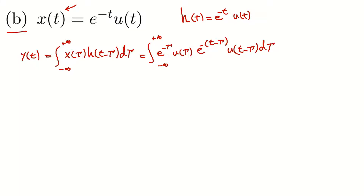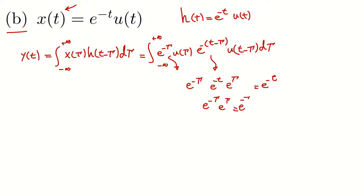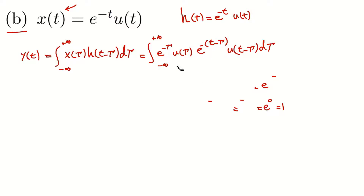Let's simplify: e^(-(t-τ)) can be written as e^(-t) · e^(τ). We have e^(-τ) here, so the multiplication of these equals e^(-t), because e^(-τ) · e^(τ) = e^0 = 1. So I can simplify this integral accordingly.